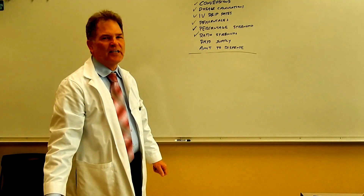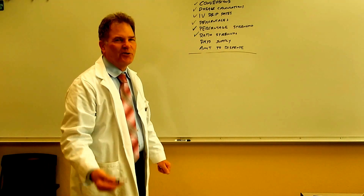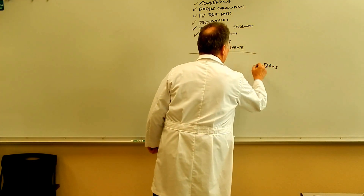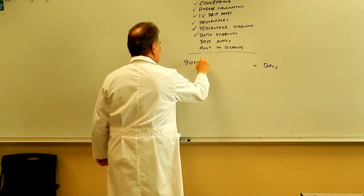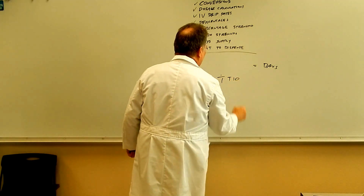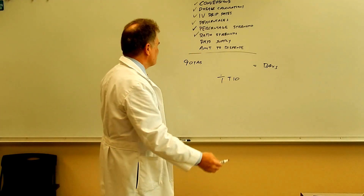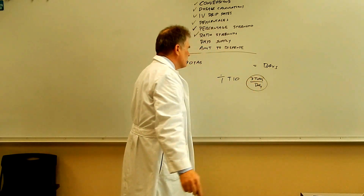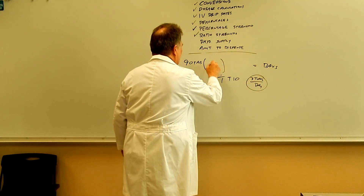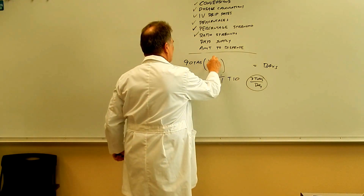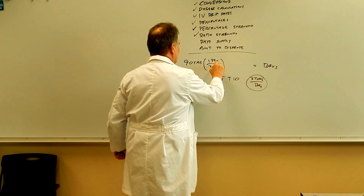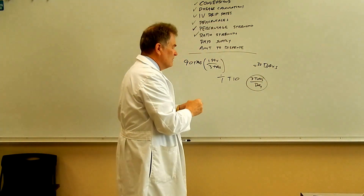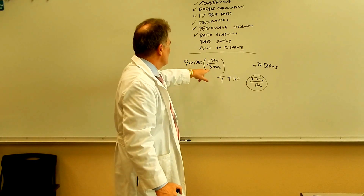For day supply — sometimes you have to figure out how many days a prescription is going to last, and if you're a technician you're going to need to know this. The answer is in days. The given is 90 tablets. The ratio comes from the SIG: one tablet TID means one tablet three times a day, so three tablets per day. We put one day per three tablets so that days are on top and tablets cancel. 90 divided by three equals 30 days. Units of the answer, the given, and the ratio.